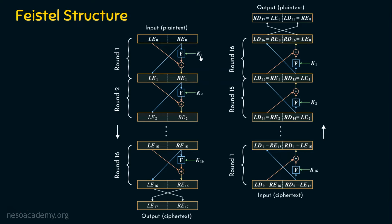These bits then undergo another round of operation — the same steps as in round 1. In round 2, the same activities are performed, except the function takes a different key k2, which is the round key for round 2. Likewise, 16 rounds are performed in total, with k16 as the round key for round 16.